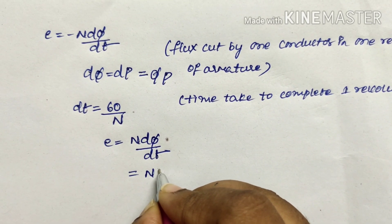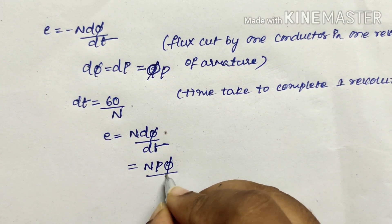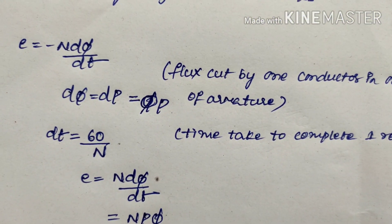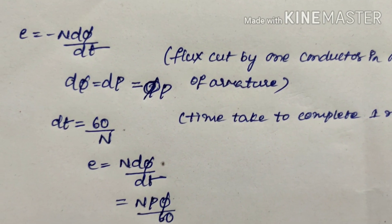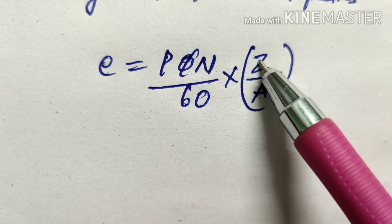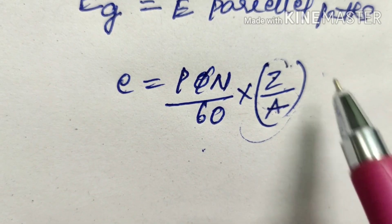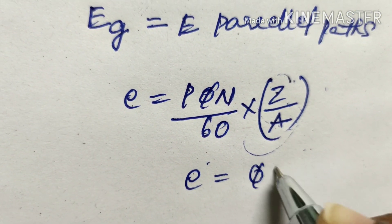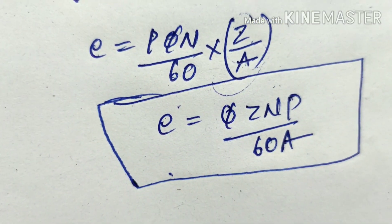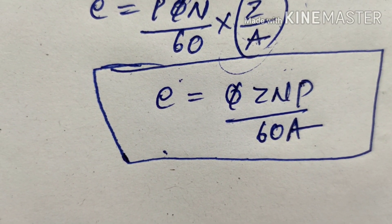The total EMF of the generator Eg equals the EMF per conductor multiplied by the number of conductors per parallel path. This gives us the final EMF equation: Eg = φZNP / (60 × A). For problems on this topic, remember this formula and substitute the values of φ, Z, N, P, and A to get the EMF of the generator.